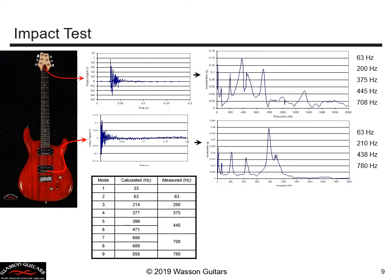The first test we'll do is an impact test: we lightly tap on the guitar and measure its vibration response. The first plot shows the output signal from the accelerometer after the tap — the vibration is high immediately after the tap but then decays very rapidly until almost nothing, because wood is so highly damped.